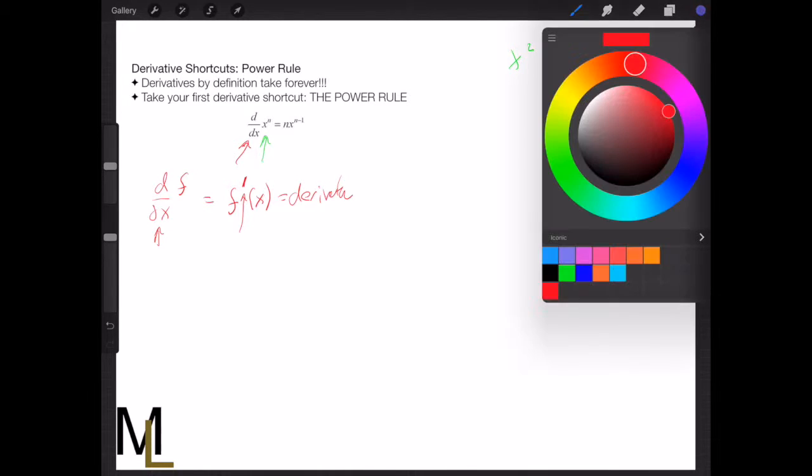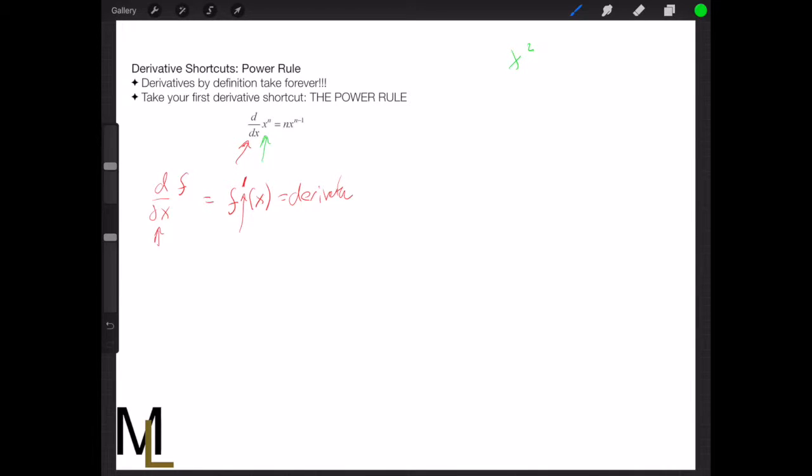But basically what the shortcut will do is it'll get you the derivative. So let's take a look at if we let f of x equal to x squared, and we take it by using the definition again. So if f of x is that, what is f of x plus delta x?